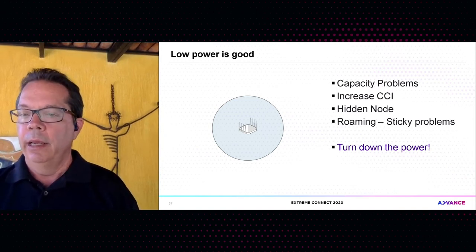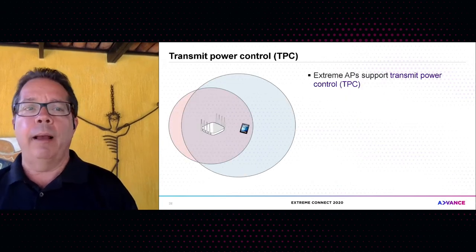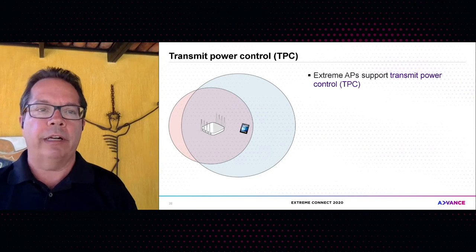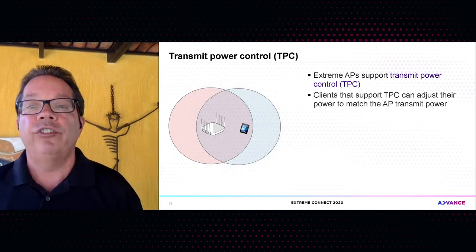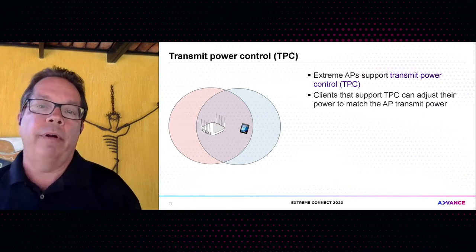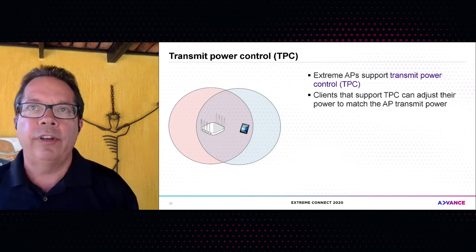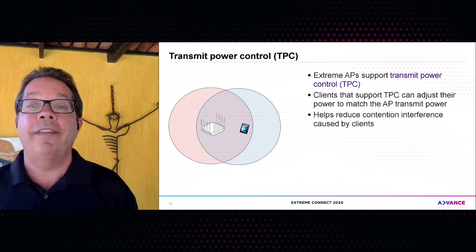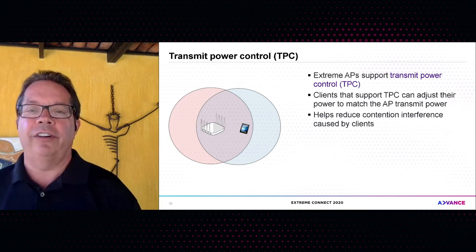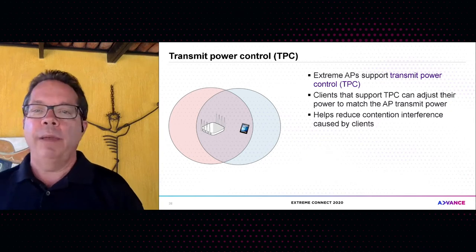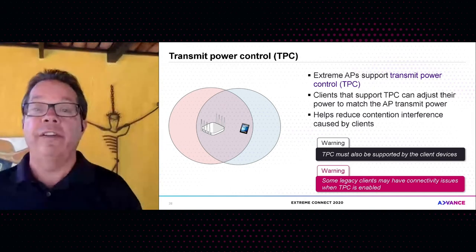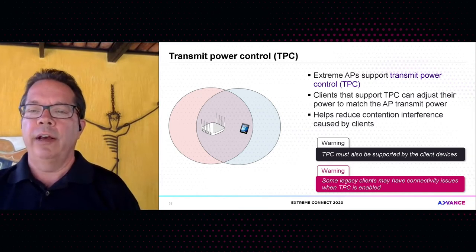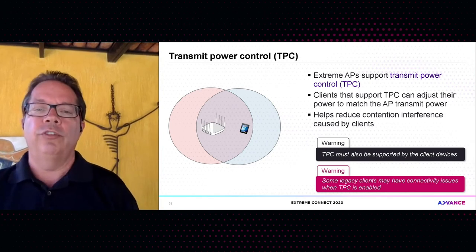I'm a big believer in transmit power control, as long as clients support it. An access point with transmit power control can send a message in an action frame telling clients to adjust their power to match the AP, creating a balanced link. The main purpose is to power down clients — because clients are the number one cause of co-channel interference. By powering down clients to match the AP, you reduce client-caused CCI. Most modern clients support this, but some legacy clients may have connectivity issues with transmit power control enabled.